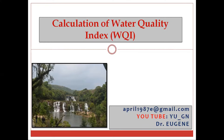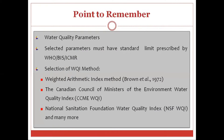For carrying out any water quality index calculation, there are a few points that need to be remembered. Point one: what are the different water quality parameters that are selected for calculating the water quality index? These parameters totally depend on the choice of the researchers or the study type. However, the selected parameters should have standard limits prescribed either by the World Health Organization, the Bureau of Indian Standards, or the Indian Council of Medical Research.